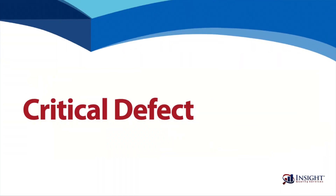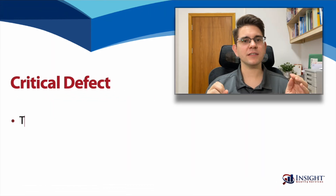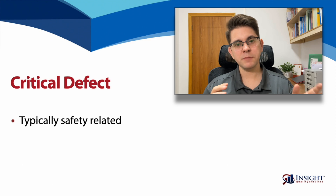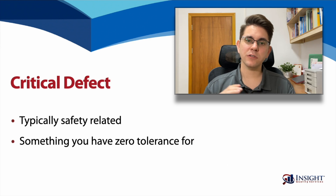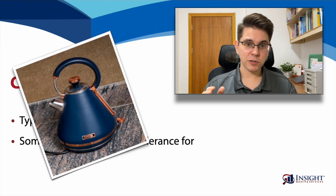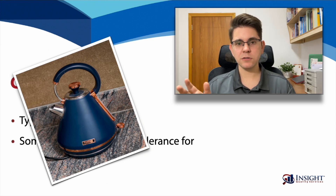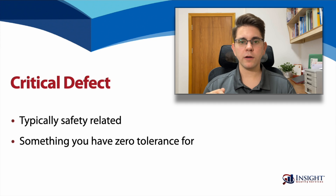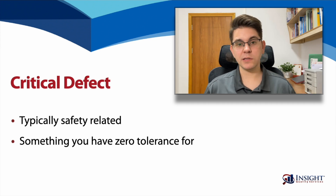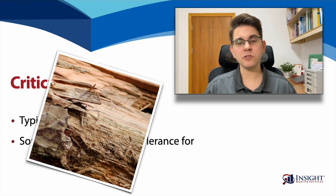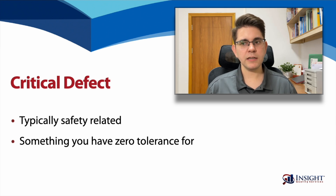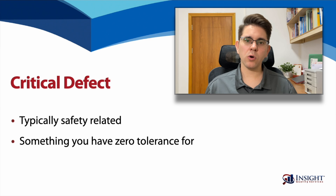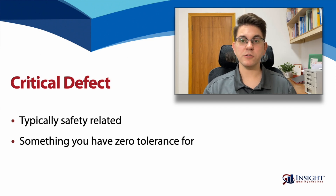A critical defect is a deviation that is typically safety-related, or it could be something that you have zero tolerance for. For example, if you have an electrical item and it has stray current that could shock someone, or coming back to the wooden picture frame — imagine that the picture frame has splinters on it that could draw someone's blood. Critical defects are typically safety-related and could lead to injury, or they are things that you absolutely cannot tolerate.